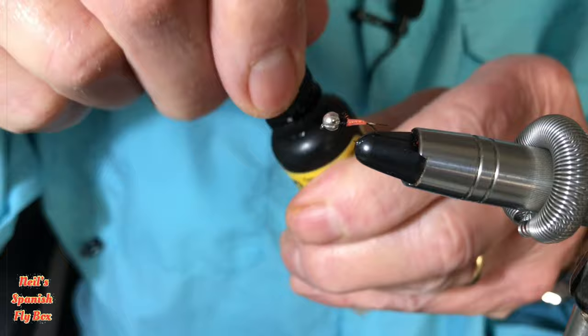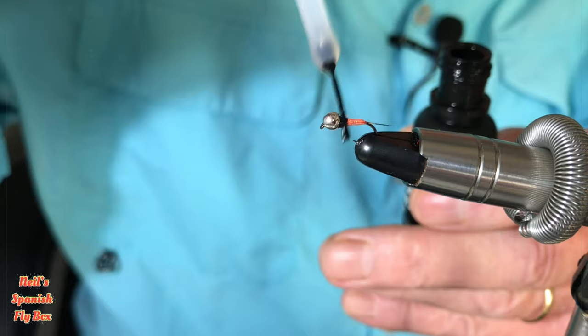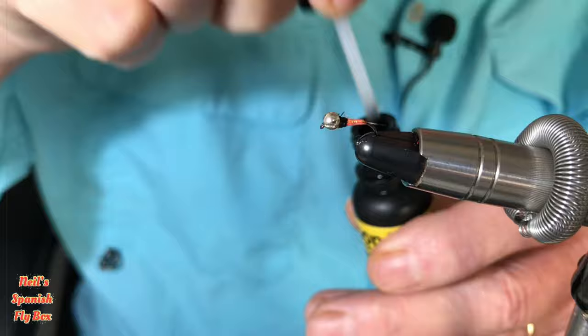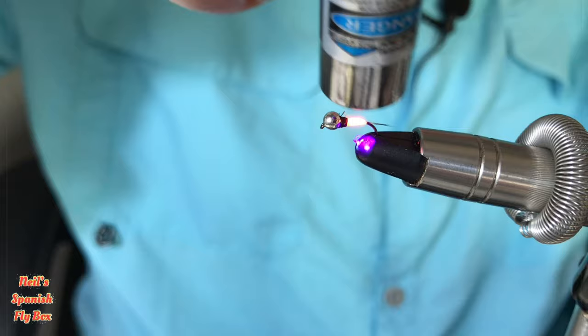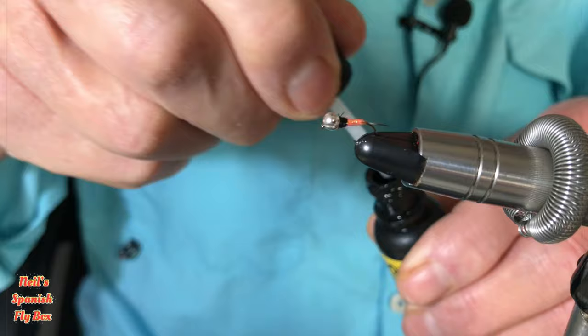Right. I'm now going to coat this with a UV varnish, a thin coat. This is Loon. Don't need a lot. You can see from the UV light the fluorescence of the floss. As I say, the pearl just damped it down a little bit. A little coat.